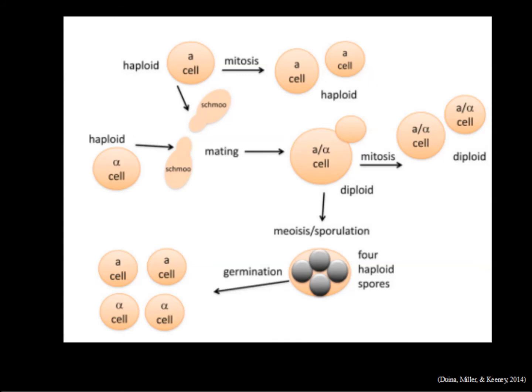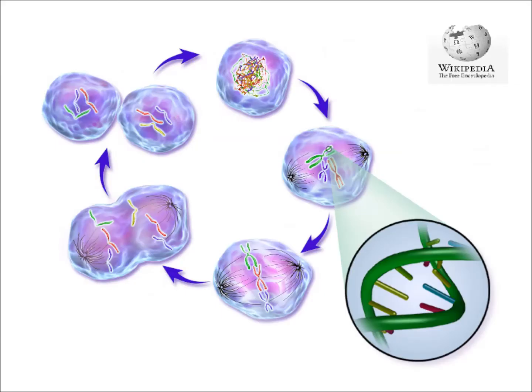Cells of opposite mating types that are in contact or close proximity join, and these fuse together to form a characteristic peanut shape. And like a peanut, there is a small point of contact between each of the cells. These then divide, and the diploid buds forming a characteristic cloverleaf shape. Alternatively, yeast can reproduce asexually.